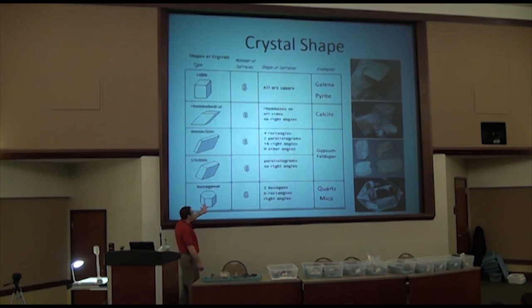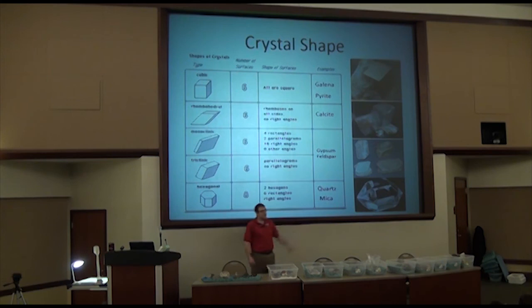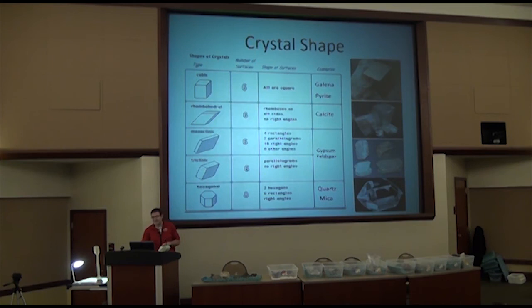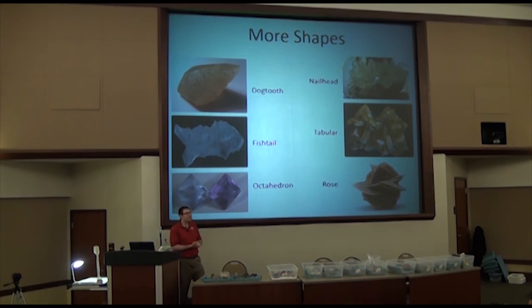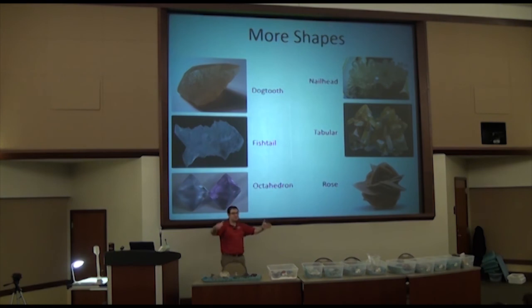The last crystal shape I'll talk about is hexagonal — a hexagon has six sides, so a hexagonal crystal should have six faces or sides. Quartz and mica are excellent examples. Keep in mind that nature doesn't always do things perfectly, so some samples may not look exactly as they're supposed to. Another shape is dog tooth — from the base to the tip it just kind of goes straight or curved with no parallel sides, meeting at a tip.